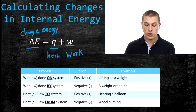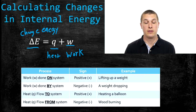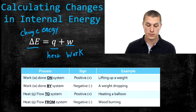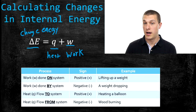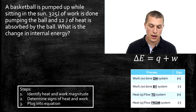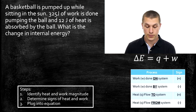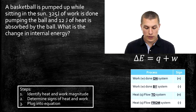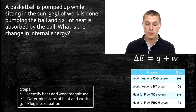We're going to look at a few problems that use this equation to calculate change in internal energy. The main challenge for these problems is identifying whether Q is positive or negative and whether W is positive or negative. Here is the first problem: a basketball is pumped up while sitting in the sun. 325 joules of work is done pumping up the ball, and 12 joules of heat is absorbed by the ball. We want to know the change in internal energy.